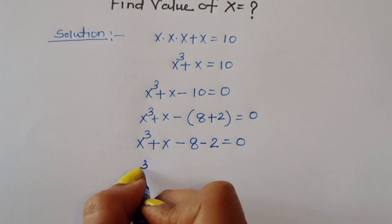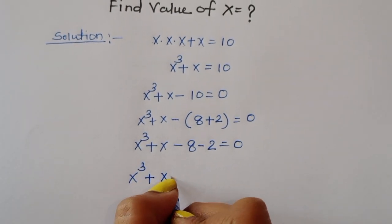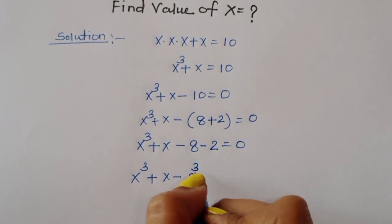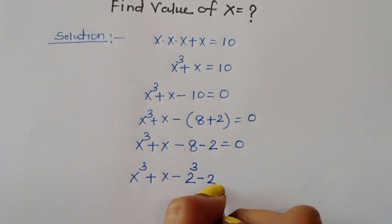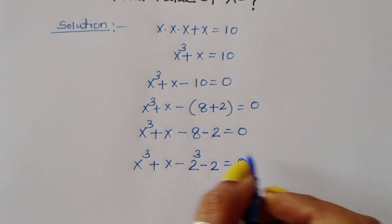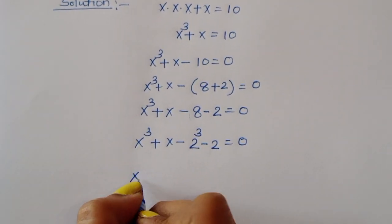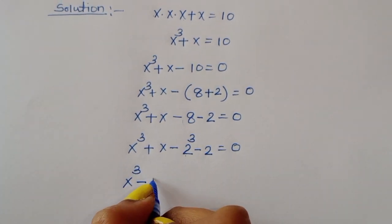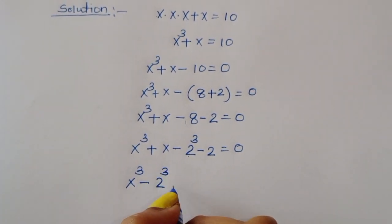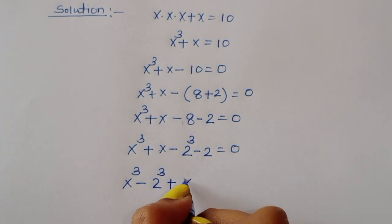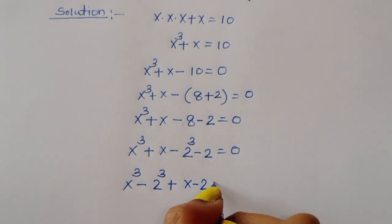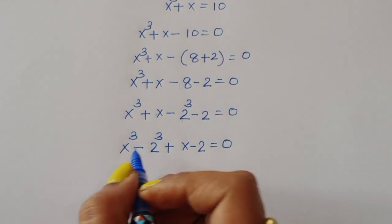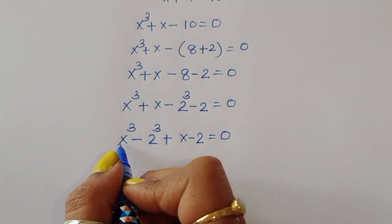Now x cube minus 8: we can write 8 in cube form as 2 cube. So we get 2 cube minus 2 is equal to zero. Rearranging the terms: x cube minus 2 cube plus x minus 2 is equal to zero.